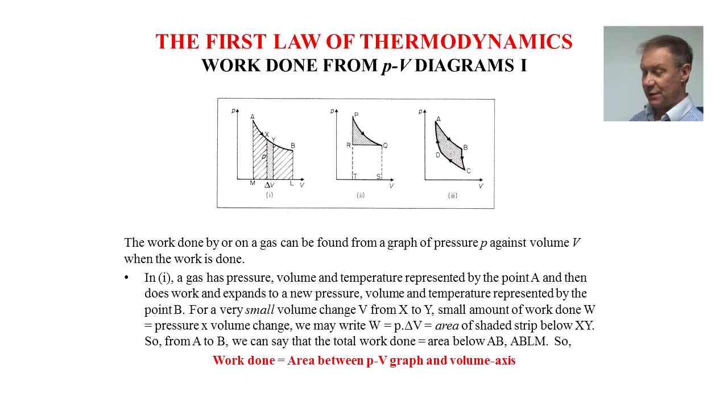Now looking at this more in detail, the work done from PV diagrams. The work done can be found from the pressure versus volume graph. In the first diagram on the left, gas has pressure, volume and temperature represented by point A, and expands to a new pressure, volume and temperature represented by point B. For a very small volume change from X to Y, a small amount of work is done W equals pressure times volume change.